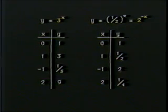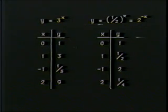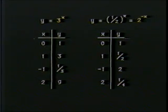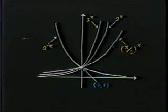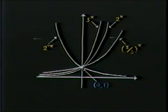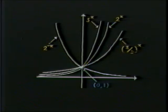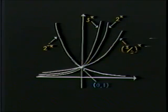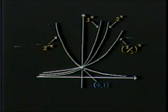We can draw lots of other exponential curves the same way by changing the base. And as we increase the size of the base, the upward curve becomes steeper and steeper, as you see here. You can also see that a negative exponent makes it go the opposite direction, and all the curves pass through the point (0, 1).